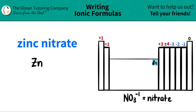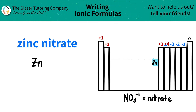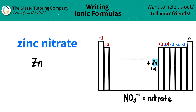I know that I have Zn, but what charge am I going to use? Zinc is a transition metal, and transition metals mostly have multiple charges. So that's why there usually is a Roman numeral to tell me what the charge of zinc will be — but I don't see a Roman numeral. Star this one: zinc, even though it's in the transition metals, always has only one charge, and that is a plus two. So whenever you're naming something with zinc or writing a formula with zinc, zinc is going to have a plus two charge.